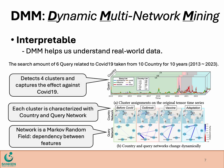This is the clustering result of online activity data obtained by DMM, showing the interpretability of the proposed method. DMM detects four clusters, and each cluster is characterized with country and query networks, showing their dependency. By analyzing the result, we can speculate how the world reacted to COVID-19.